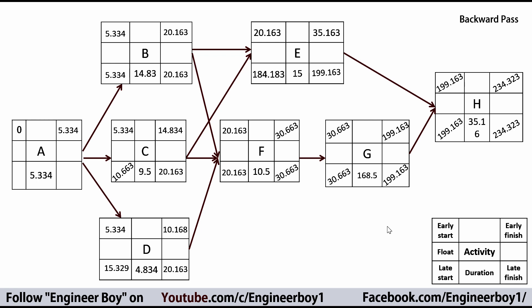Activity A is the predecessor for B, C, and D. Their late starts are: B = 5.334, C = 10.66, and D = 15.3-something. Since activity B has the minimum late start, we shift that to activity A and subtract its duration, giving a late start of zero — confirming the early start and late start of activity A are both zero.